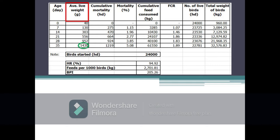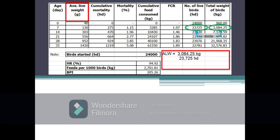Average live weight of birds is calculated as the total weight of birds divided by the total number of birds from which the said total weight was taken. For example, the average live weight of birds at the seventh day of the growing period is equal to 3084.25 kilograms divided by 23,725 birds, which is equal to 0.13 kilogram or 130 grams, as there are 1000 grams in one kilogram. Average live weight of birds on the succeeding periods is calculated in the same manner.